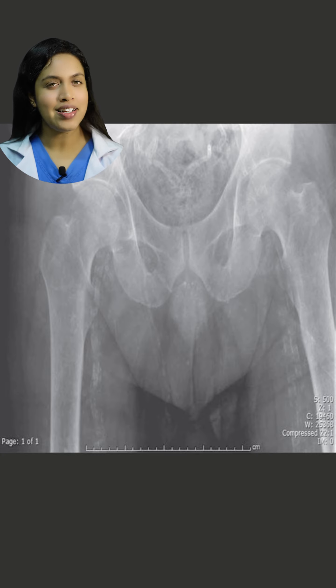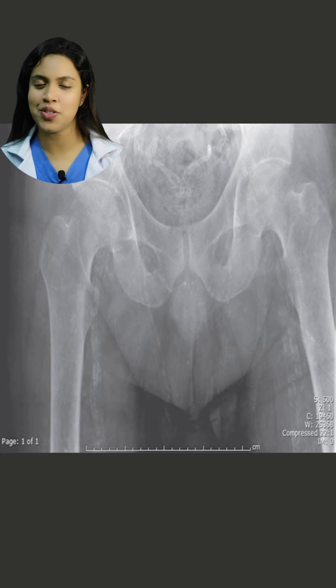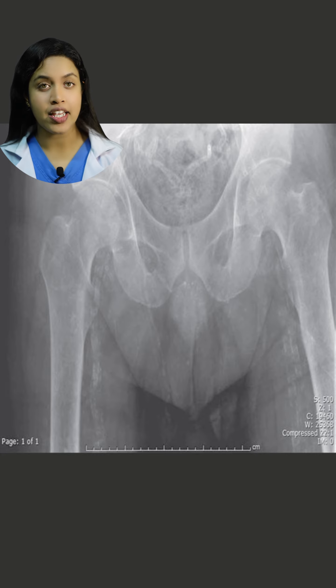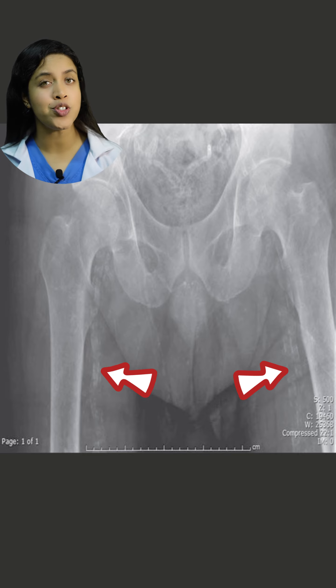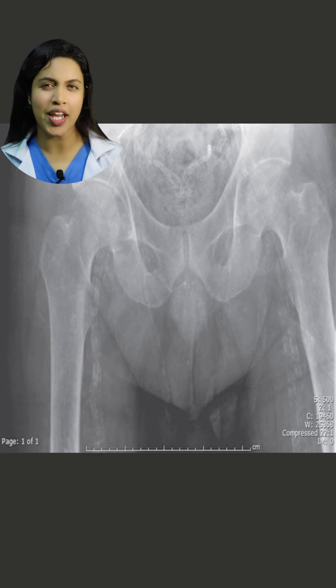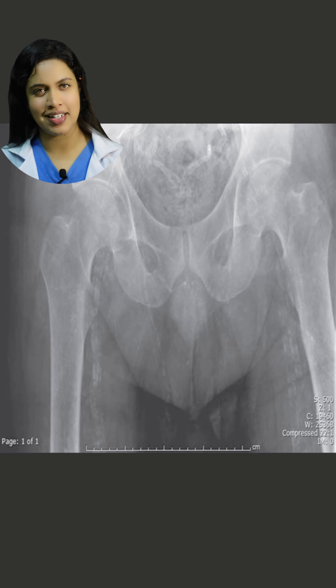Alright, let's analyze this together. The X-ray shows heavily calcified arteries and osteopenia, but no acute bone abnormalities are visible. However, given the patient's clinical presentation, further imaging is warranted.